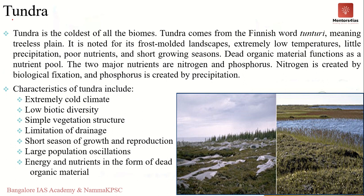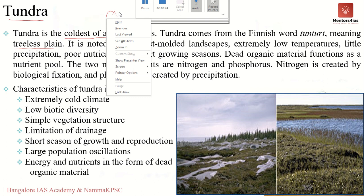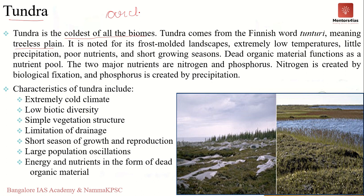The first ecosystem we will take up is tundra. The word tundra actually means a barren land, since they are found where environmental conditions are very severe. Broadly, tundra can be classified into two types: arctic tundra and alpine tundra. The arctic tundra extends as a continuous belt below the polar ice cap and above the tree line in the northern hemisphere, occupying the northern fringe of Canada, Alaska, European Russia, Siberia, and small islands along the Arctic Ocean. In the southern hemisphere, the tundra region is very small because that part of the globe is mostly ocean.